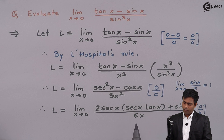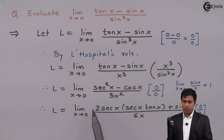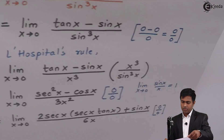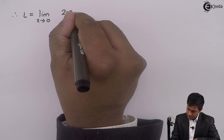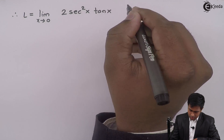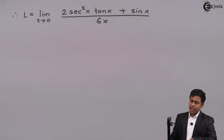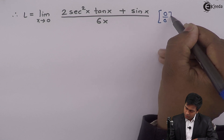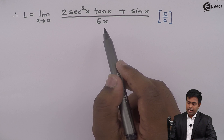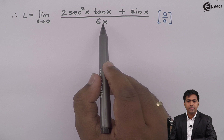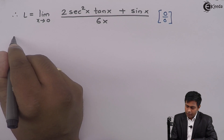Writing the function properly, this becomes 2 sec square x times tan x plus sin x upon 6x. Therefore L equals limit x tends to 0 of 2 sec square x times tan x plus sin x upon 6x. There is another way to solve this: we divide the two functions separately by 6x so that the first part gives tan x upon x and the second part gives sin x upon x, where we can apply standard limit formulas.